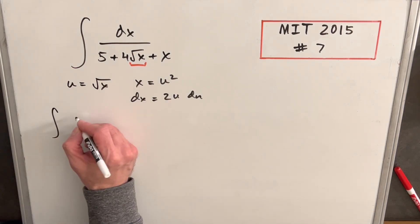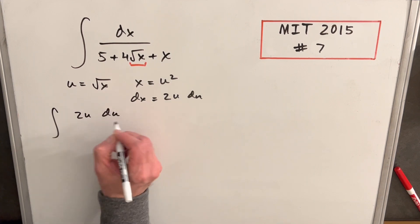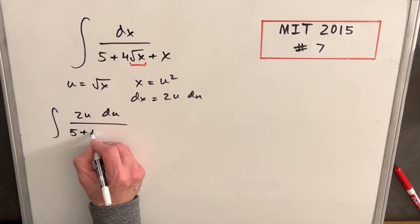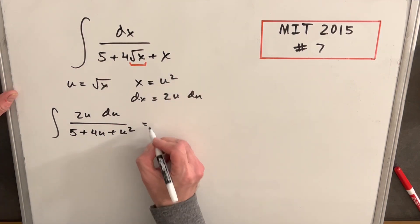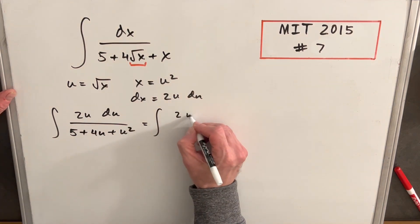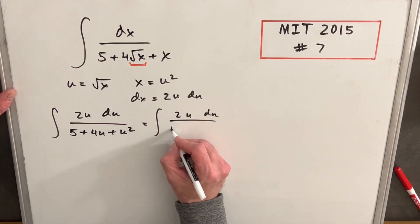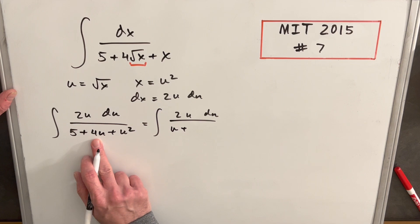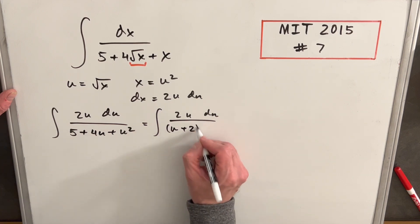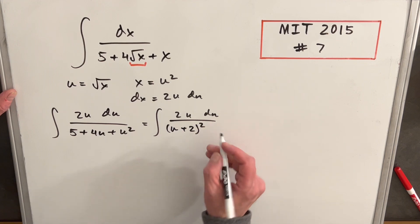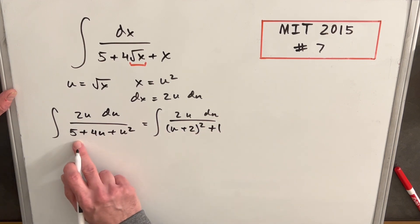We'll go ahead and make that substitution. So first for our dx, we're going to have 2u du in the numerator. Five plus, we're going to have a 4u, and x is u squared. Then I can factor the denominator. We'll take half of this. So we'll do u plus, then half of 4 is 2. So we'll do u plus 2 squared. So it's going to be u squared plus 4u plus 4. But we need an extra 1 in order to get back to 5.